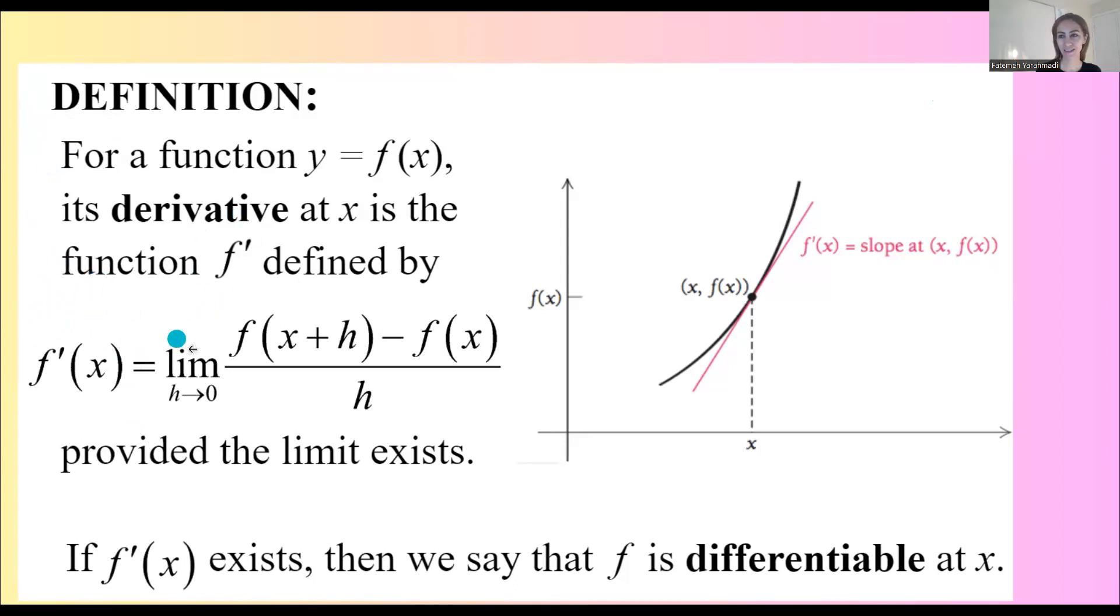f prime of x is the limit of difference between y values over difference between x values. After simplification, it is h as h goes to 0. If this limit exists, we say that the function is differentiable, and it gives us instantaneous rate of change.